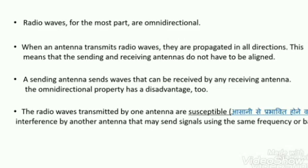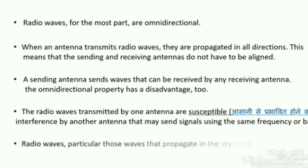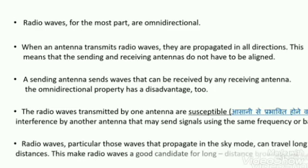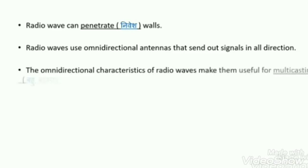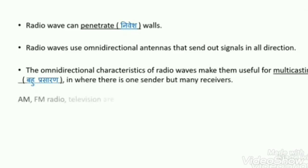The omnidirectional property of radio waves is an advantage, but it also comes with a disadvantage: radio waves transmitted by one antenna are susceptible to interference. When two antennas transmit signals at the same time, the signals can interfere with each other. Radio waves also support sky mode propagation and can penetrate walls. The omnidirectional characteristics make radio waves useful for multicasting, meaning a signal can be received by multiple receivers.